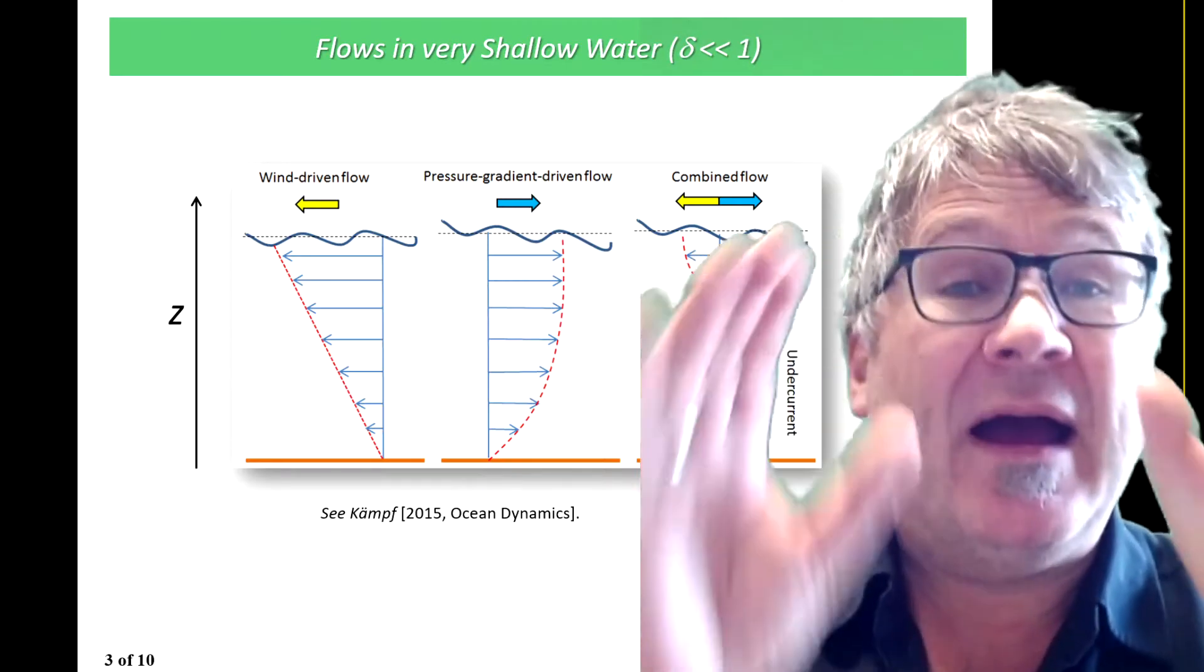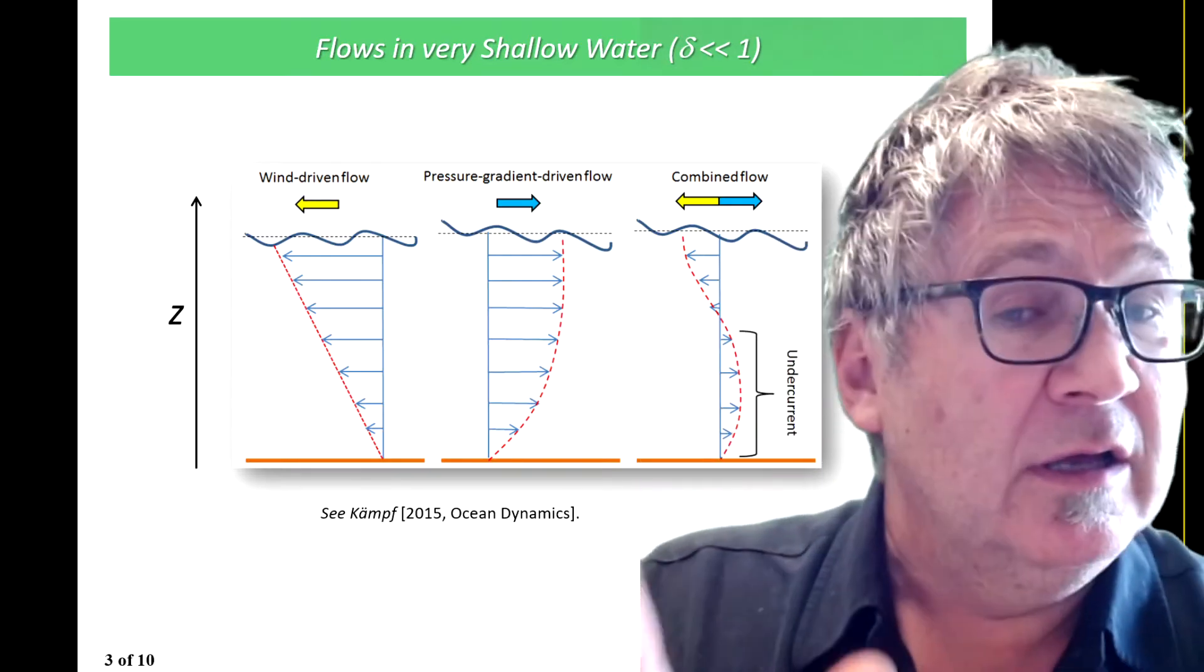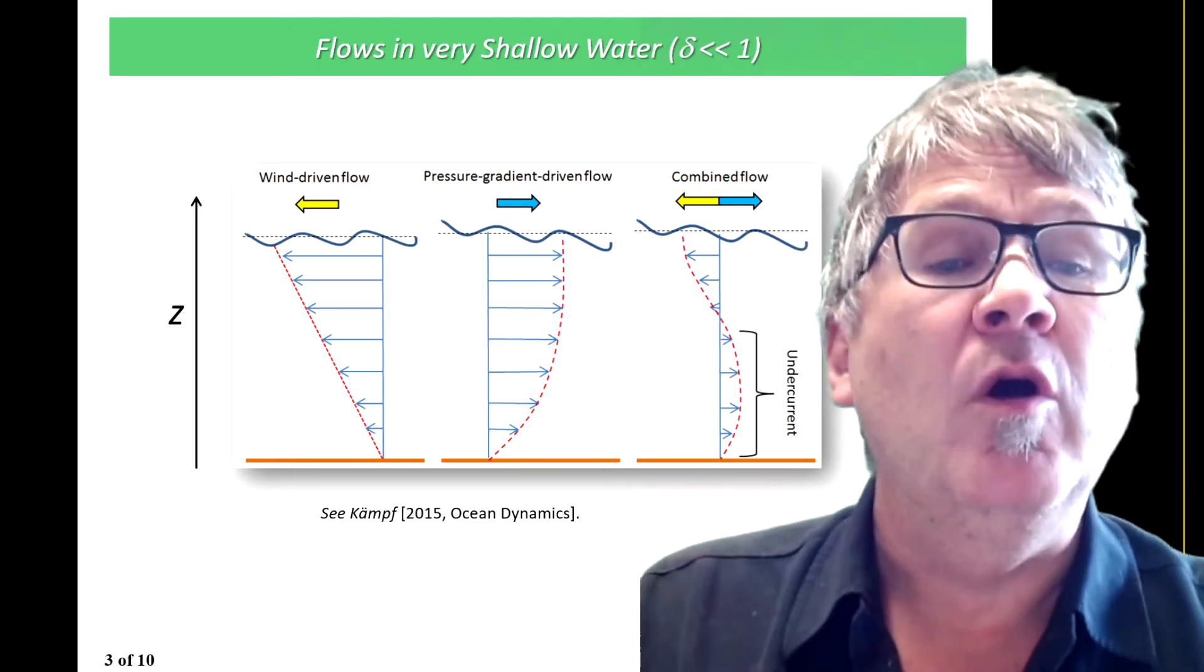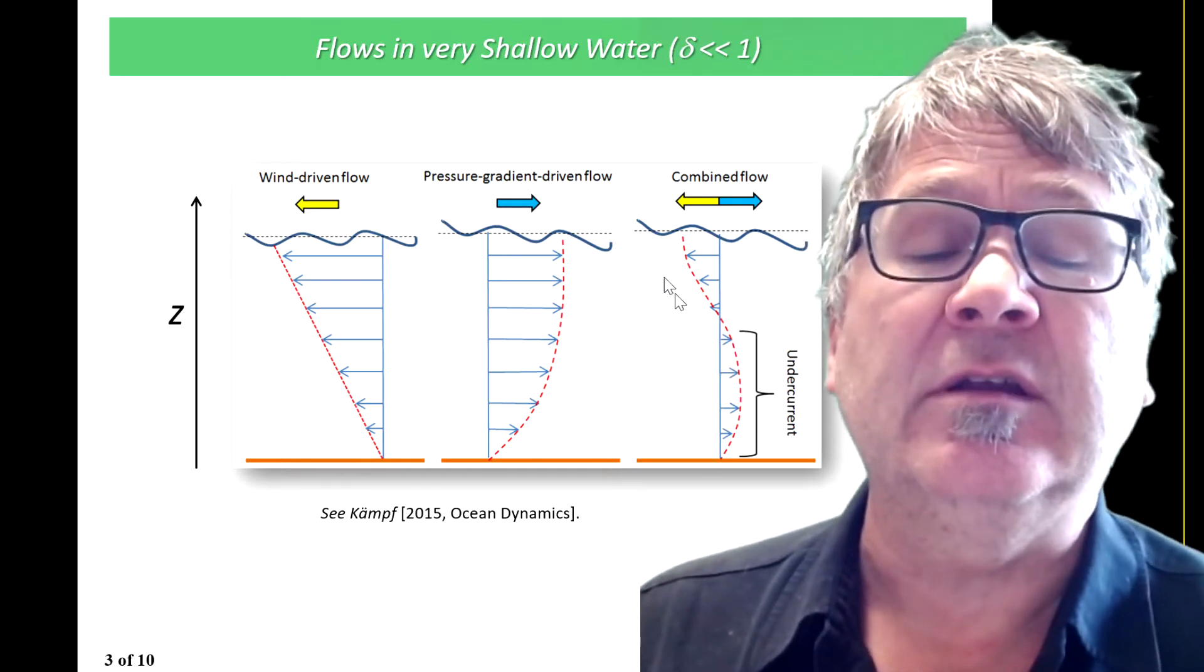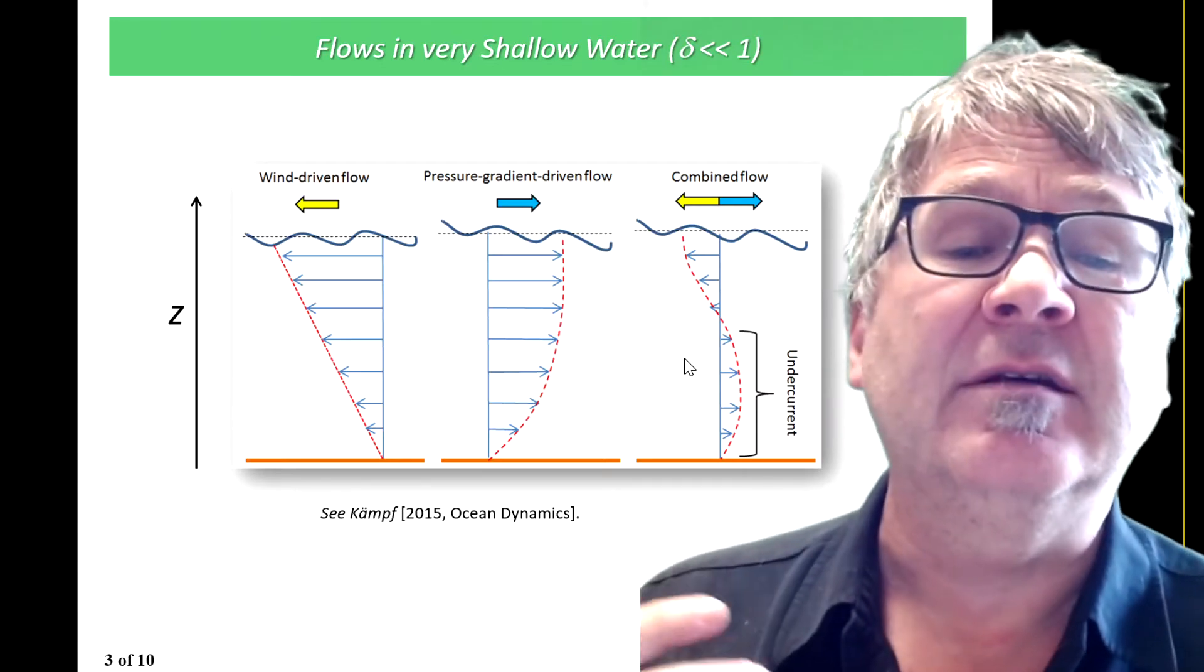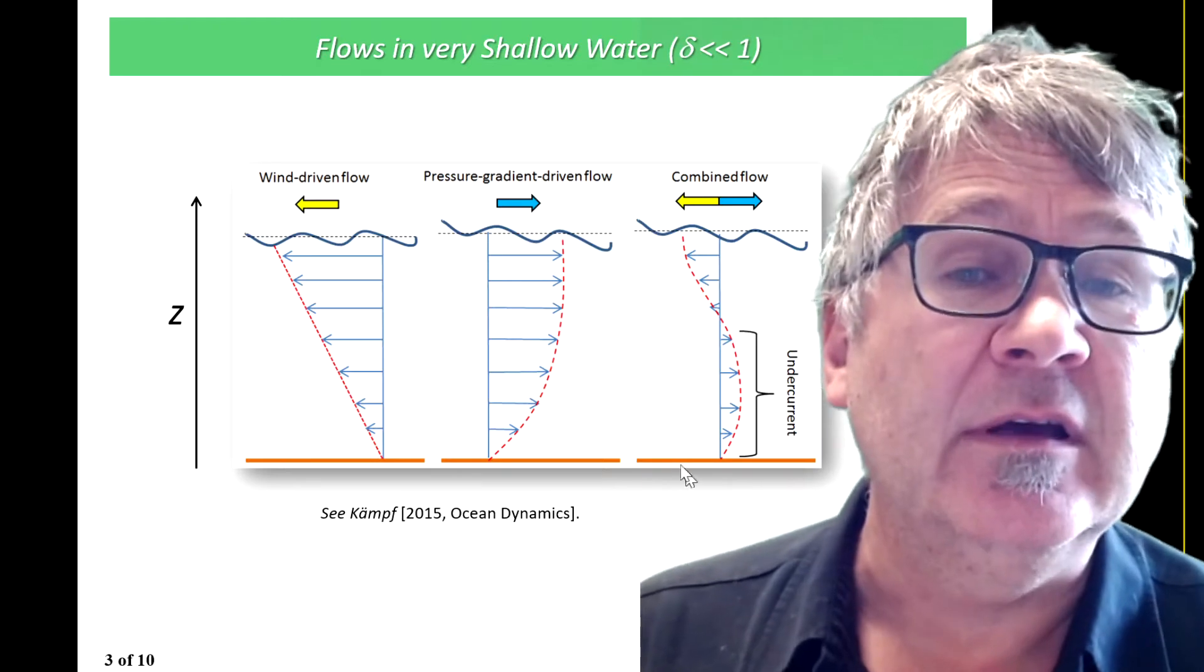If you combine these flows, you don't get a cancellation. You get a combined flow where you have flow driven by the wind in one direction near the surface and you have an undercurrent underneath.